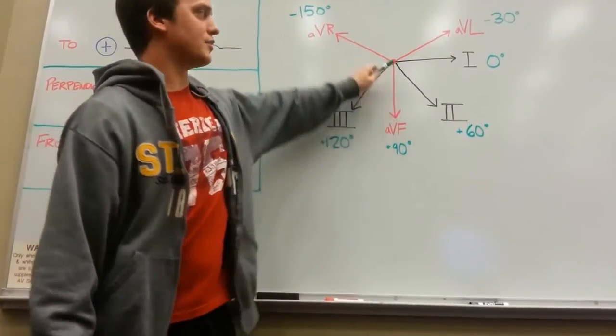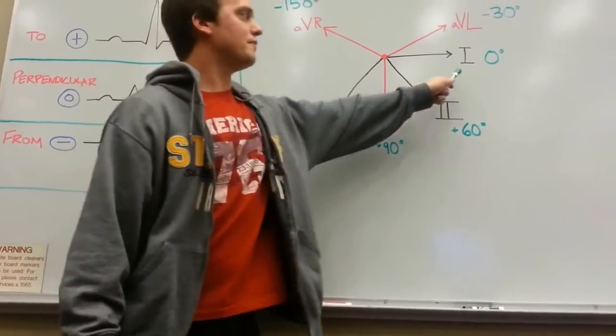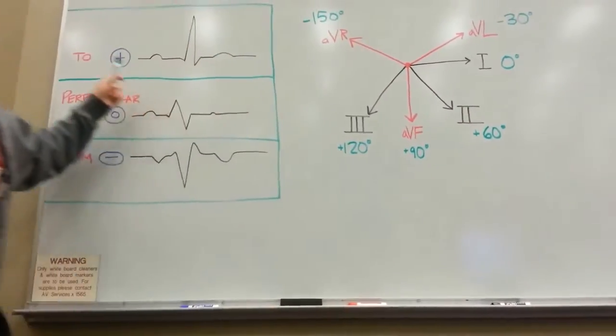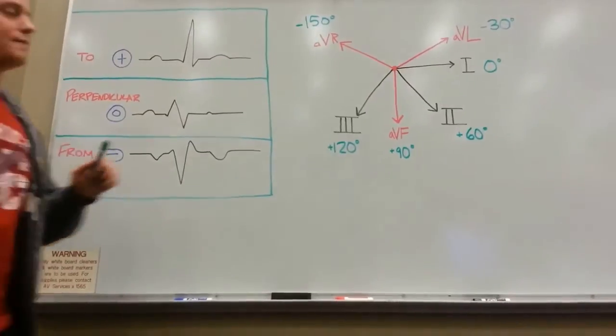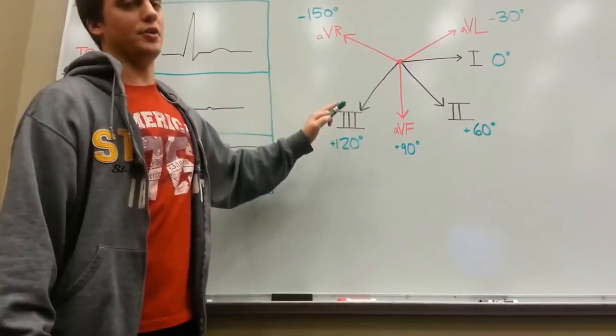If you have a healthy heart that's going to be going somewhere around the vector of positive 60 degrees, both of these leads should show a positive deflection. If they don't show positive deflection, you'll then have to look at other leads and decide which quadrant you're in.